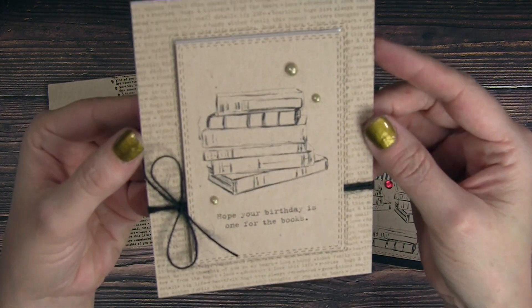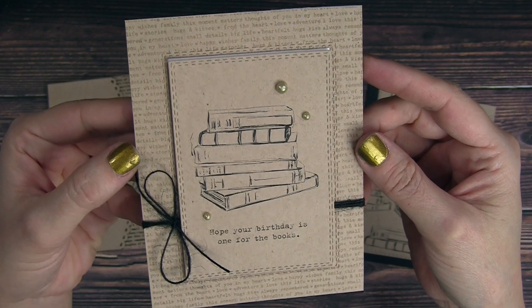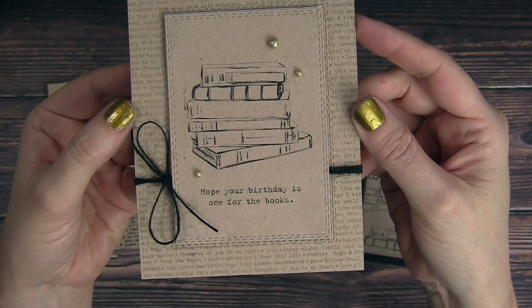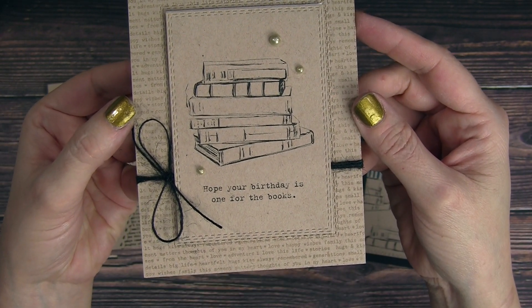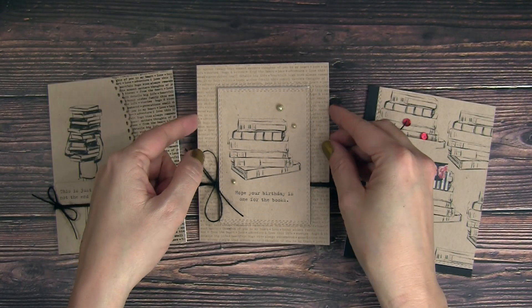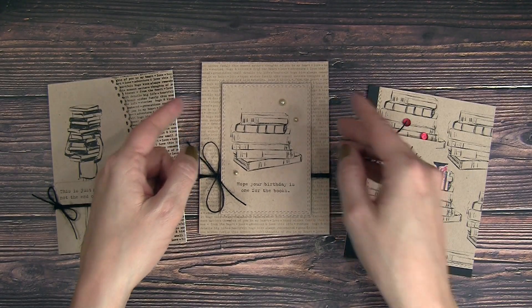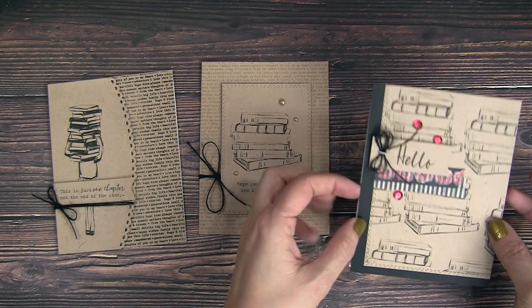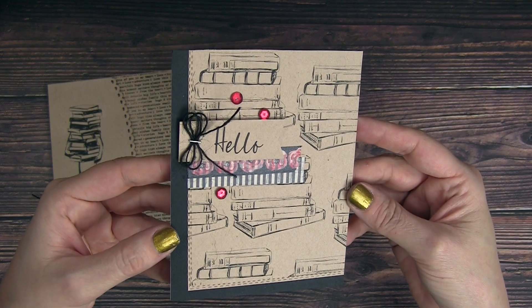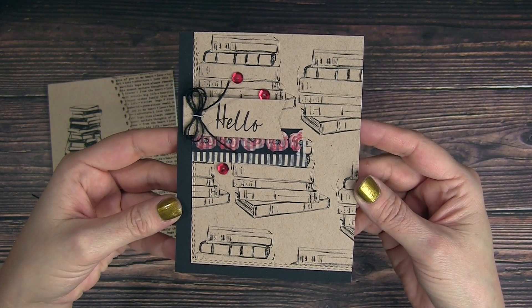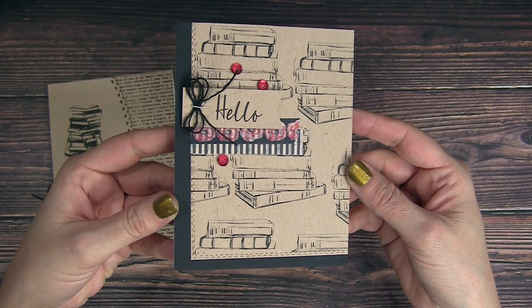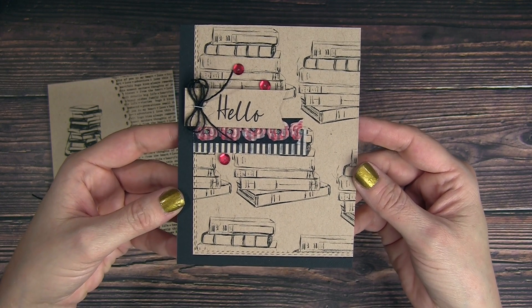And then card number two, I just love the softness of the craft colored ink on craft paper. Again, you could also use clear embossing ink as well, it works just the same. And that center panel popped up on this one is just amazing with the little bit of Nuvo drops. And then this one is the outlier, it has a little bit of color. I just love that pop of red and the repeat pattern of those books in the background as well.